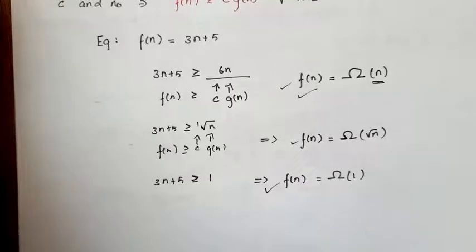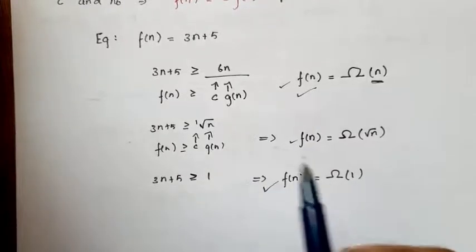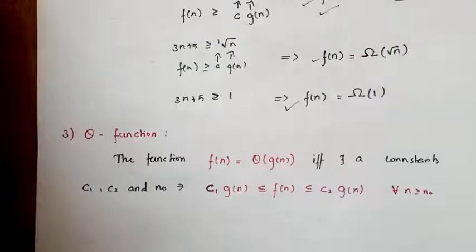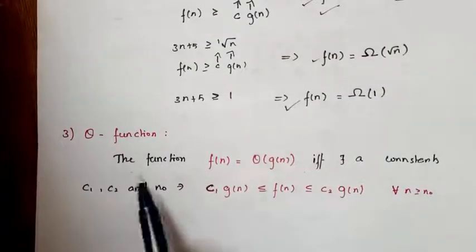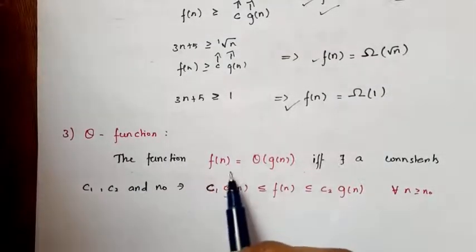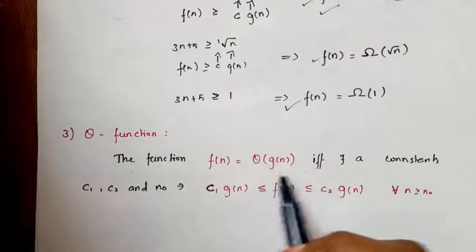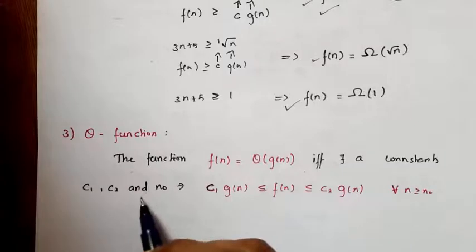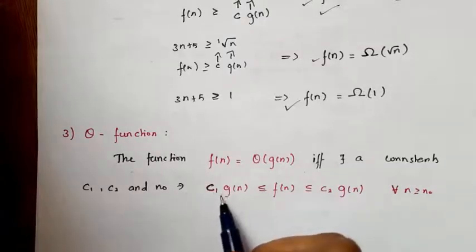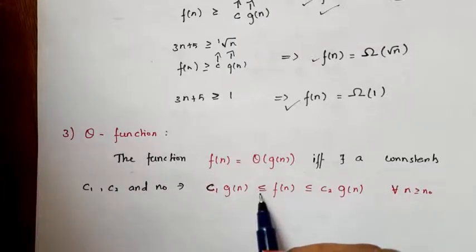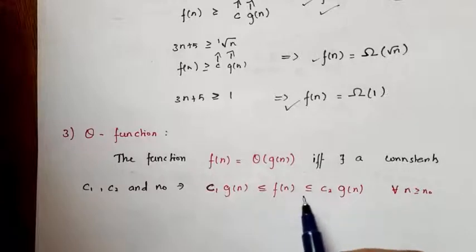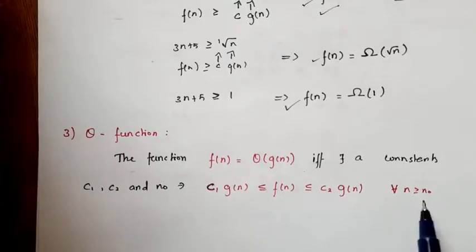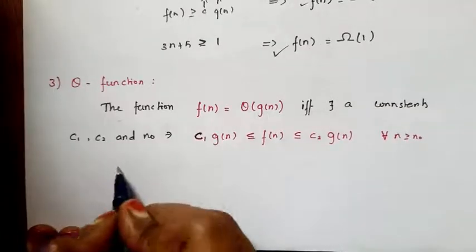Next we will see the average bound function, that is Theta notation. As per the definition, f(n) is equal to Theta of g(n) if and only if there exist constants c1, c2, and n-naught such that c1·g(n) ≤ f(n) ≤ c2·g(n) for all n greater than or equal to n-naught.